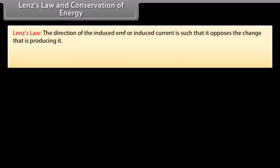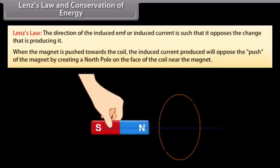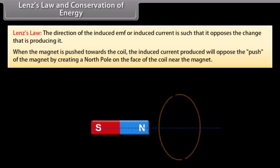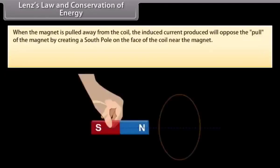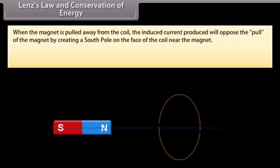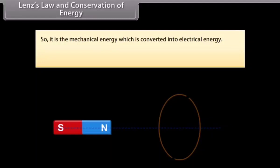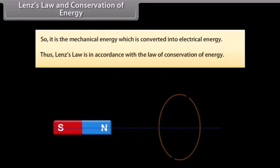Lenz's Law and Conservation of Energy: Lenz's Law states that the direction of the induced EMF or induced current is such that it opposes the change that is producing it. When the magnet is pushed towards the coil, the induced current produced will oppose the push by creating a north pole on the face of the coil near the magnet. The induced EMF opposes the change that produces it; we perform mechanical work in causing the change in magnetic flux. So it is mechanical energy which is converted into electrical energy. Thus Lenz's Law is in accordance with the law of conservation of energy.